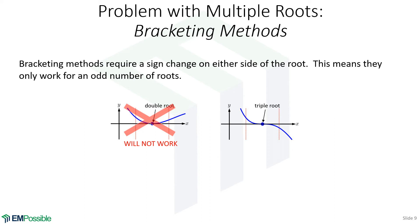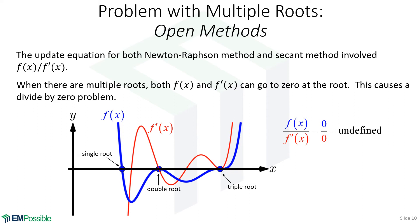Now, with root finding methods, there are problems with multiple roots. First, we'll look at the bracketing methods. Bracketing methods require that the function changes sign on either side of the root. So already, we know that a bracketing method can really only be applied to an odd number of roots. Open methods, it will turn out we'll have sort of an update equation to keep updating our estimate. And in the Newton-Raphson method, we will have to evaluate the function divided by its derivative. Well, if we have multiple roots, anything other than a single root, we're dividing by zero. And our function is zero at a root, of course, we're dividing by zero and we'll get undefined. And so these multiple roots also don't work for open methods for that reason.